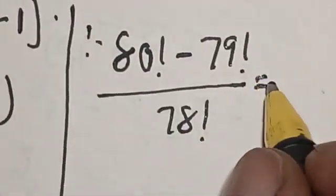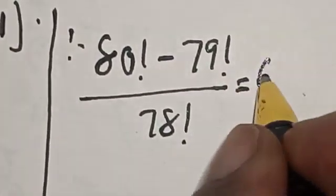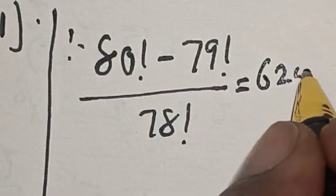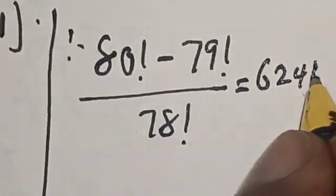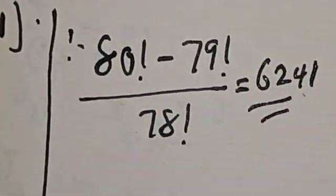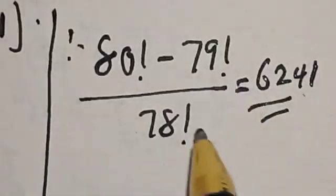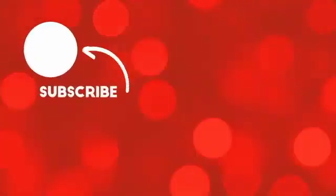80 factorial minus 79 factorial divided by 78 factorial is equal to 6241. That is our final answer. If you enjoyed the class, please don't forget to like, share, comment, and subscribe. Thank you.